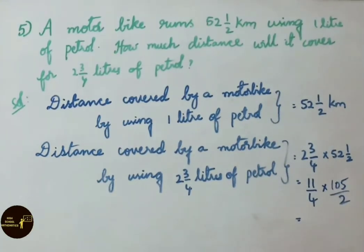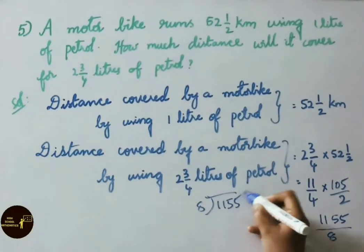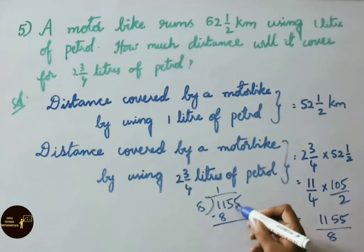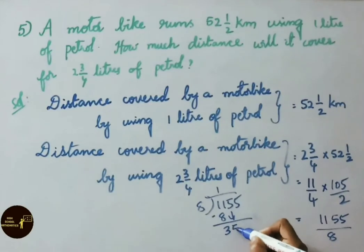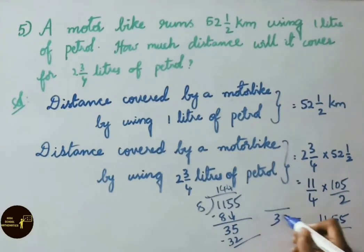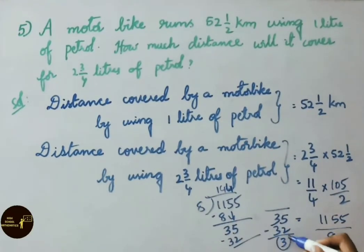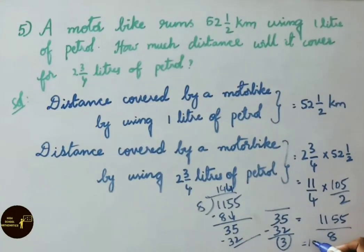Now multiply the numerators: 11 into 105. 11 fives are 55, 11 ones are 11, so 11 into 105 equals 1155, divided by 4 twos which are 8. Simplifying 1155 by 8: 8 goes into 11 once (remainder 3), bring down 5 to get 35; 8 fours are 32, 35 minus 32 is 3; bring down 5 to get 35 again, 8 fours are 32, remainder 3. So the answer is 144 and 3 by 8 kilometers.